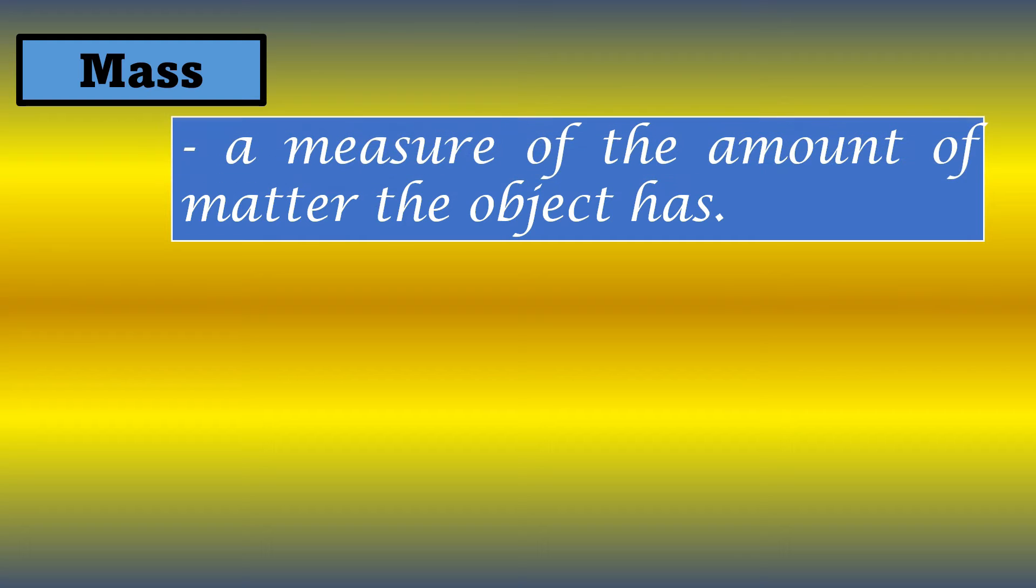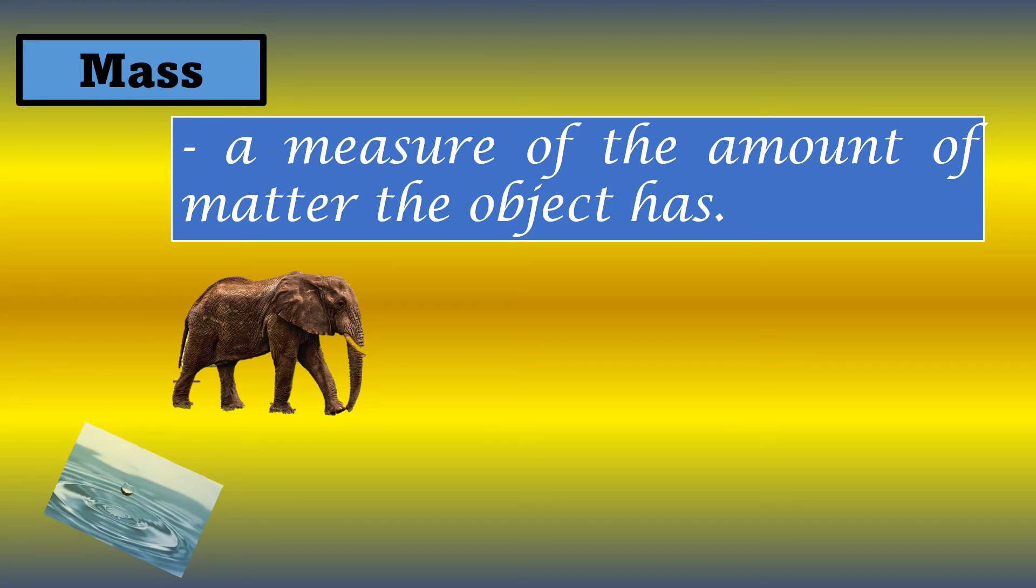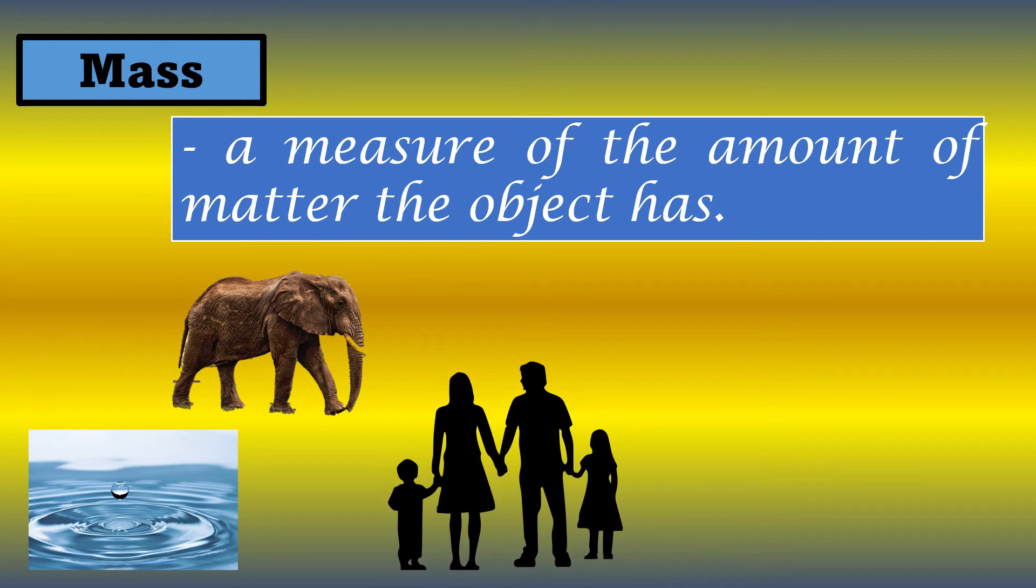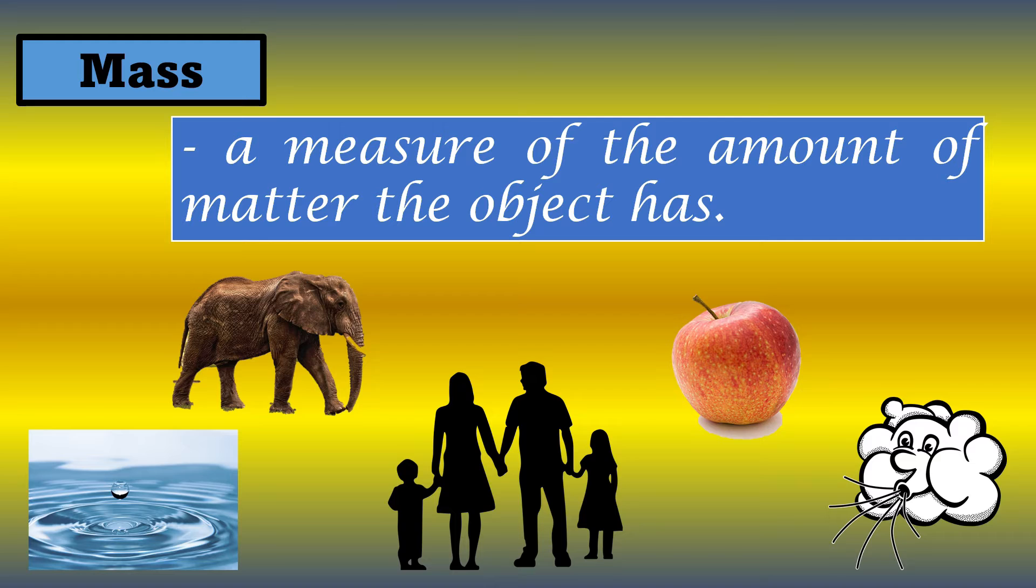If we talk about mass, it is defined as a measure of the amount of matter the object has or the amount of matter within the object. This means the weight of something. For example, the weight of an elephant, water, humans, air, and other things like fruits and vegetables. All of these materials have their own weight, their own measurement of mass.